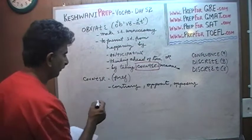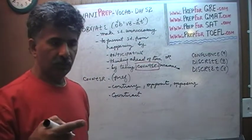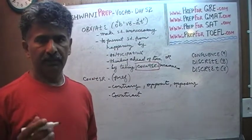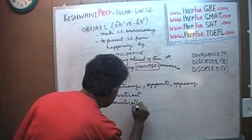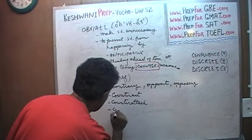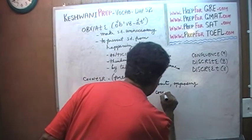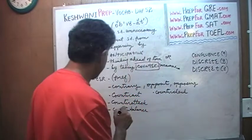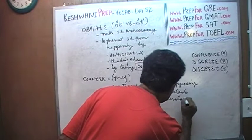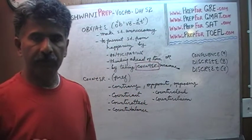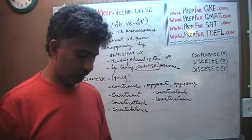For example: counteract — to counteract means to do something which will undo somebody else's act; somebody acts in a certain way and you counteract it, you negate it. Counterattack. Counterbalance — it's one word. Countercheck — somebody checks something and you're going to double-check it, you countercheck it. Counterclaim — usually in a courtroom; somebody sues someone for something and the other person turns around and sues the first person for something else; that's called a counterclaim.